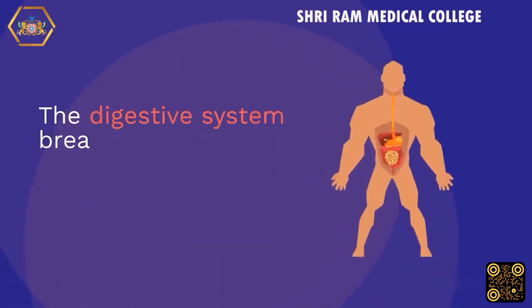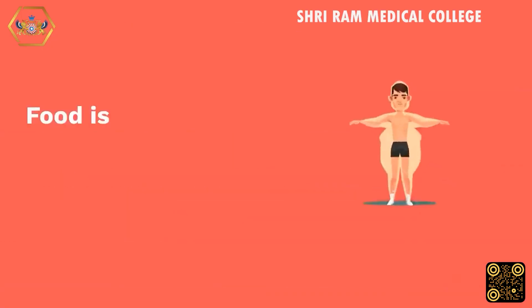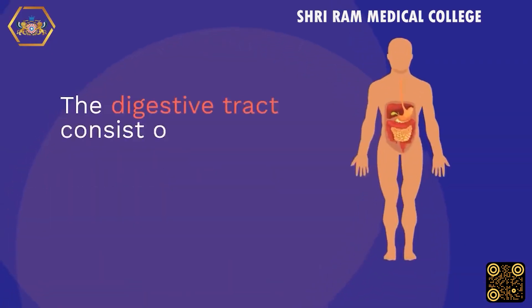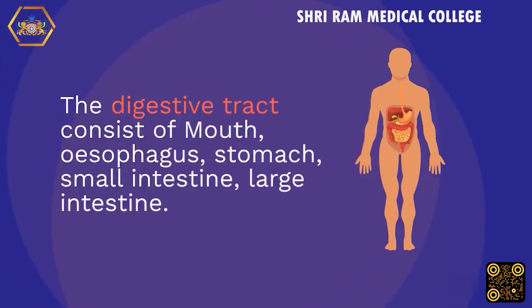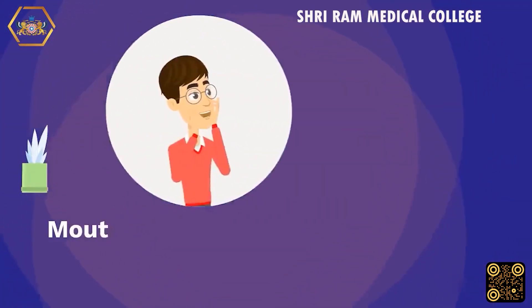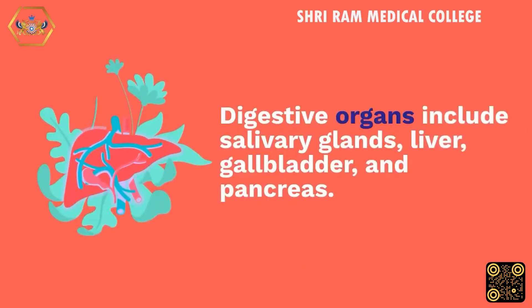The digestive system breaks down food into chemicals the body's cells can absorb. Food is broken down into absorbable molecules and waste is eliminated. The digestive tract consists of the mouth, esophagus, stomach, small intestine, and large intestine. Mouth accessories include the tongue and teeth. Digestive organs also include the salivary glands, liver, gallbladder, and pancreas.